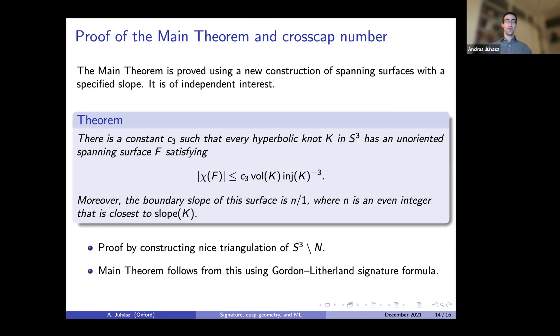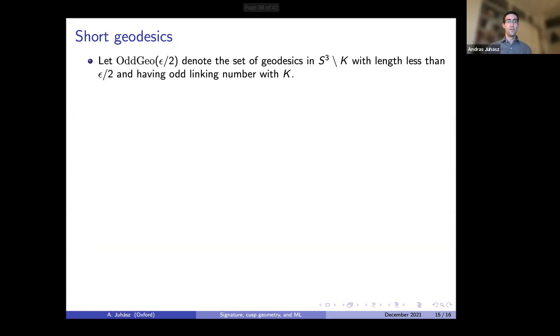To obtain this theorem relating signature and slope, one uses the Gordon-Litherland signature formula. The boundary behavior comes in from that formula, because when you take the signature of the Goeritz matrix, there is also a term which measures the normal Euler number. This is given by this natural slope, or at least the closest even integer.